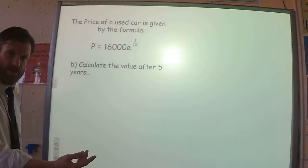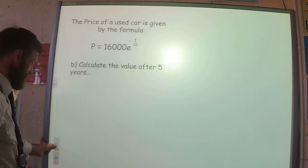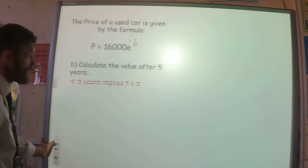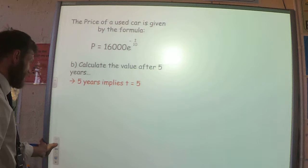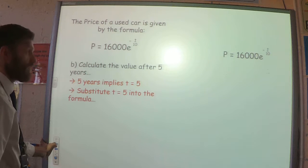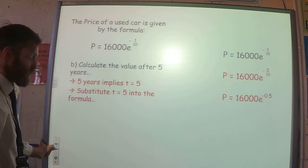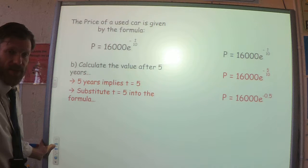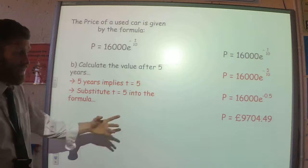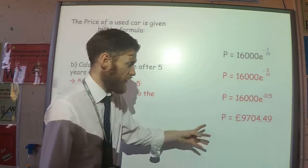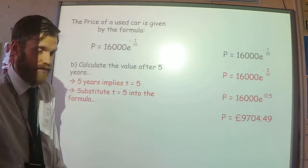For part B, calculate the value after 5 years. Substituting t equals 5 into the formula and putting that into a calculator, the value of the car after 5 years is £9,704.49.